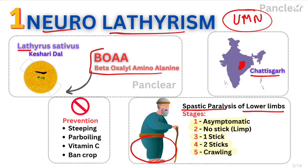If we can't stop this, we need to address the dal. We must use steeping and parboiling. Steeping is soaking in water and cleaning. Parboiling is to partially boil the dal before the milling process. Adding vitamin C will also be helpful. If neurolathyrism comes, banning the crop is the prevention method.